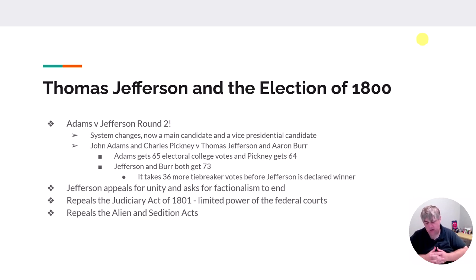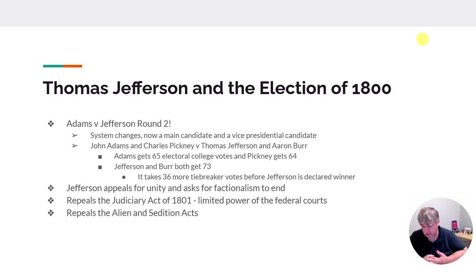When Jefferson becomes president, he asks for unity and for factions to end. He decides it's too expensive to run the courts around the clock and too expensive to appoint judges for life, so the Judiciary Act of 1801 is repealed, though it will be replaced in some fashion later. Jefferson also repeals the Alien and Sedition Acts, which is why they're not in effect anymore.